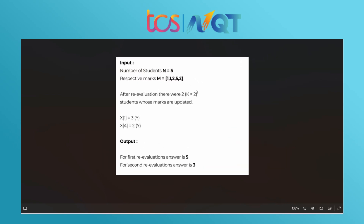For the sample input: N = 5 students, K = 2 re-evaluations, marks array = [1, 1, 2, 5, 2]. Then we get the position and value to be updated for each re-evaluation. The output should be: for the first re-evaluation, the answer is 5; for the second re-evaluation, the answer is 3.